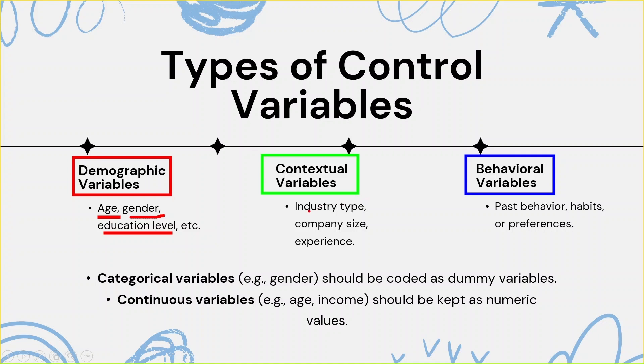Contextual variables include industry type, size, and experience. Experience means that if you conduct a survey with persons in an industry, the respondent's experience also acts as a control variable. On the other hand, past behavior, habit, and preference may also act as control variables.